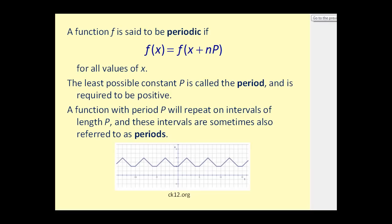A function f is said to be periodic if f(x) is equal to f(x + n·p). If these two functions are equal for all values of x, the least possible constant p is called the period. This period does have to be positive. A function with period p will repeat on intervals of length p.